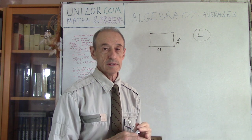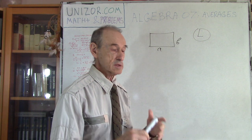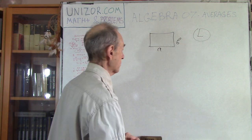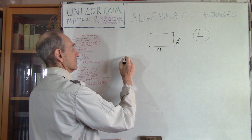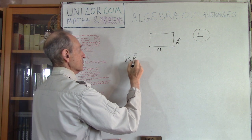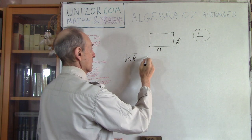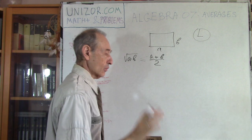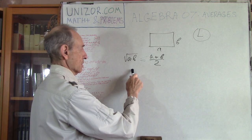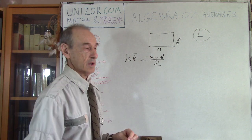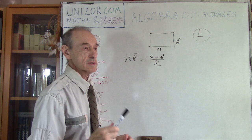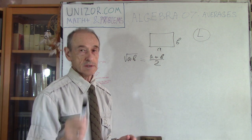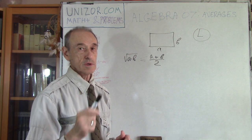I suggest you pause the video and try to solve this problem yourself. The way I will solve it is based on the following inequality: the geometric average of two numbers is less than or equal to their arithmetic average. I have already spoken about this in the main course called Math for Teens, and the notes for this lecture contain the exact reference.